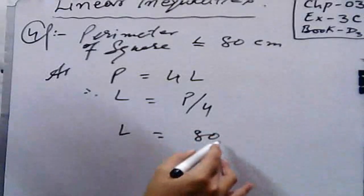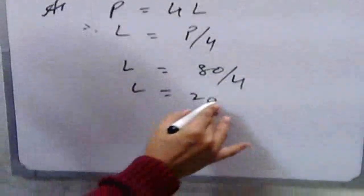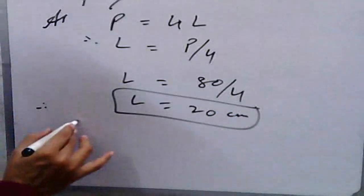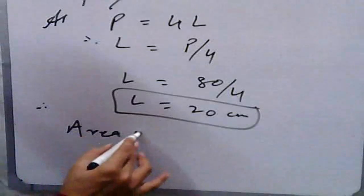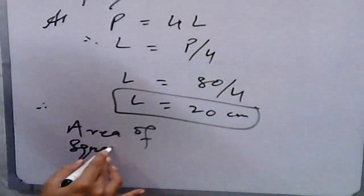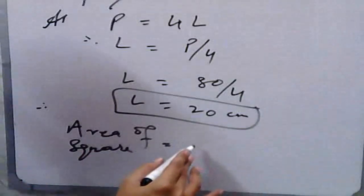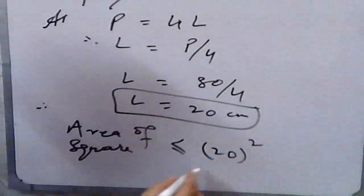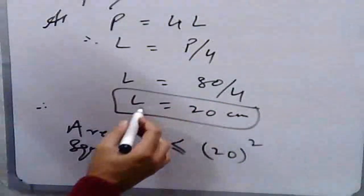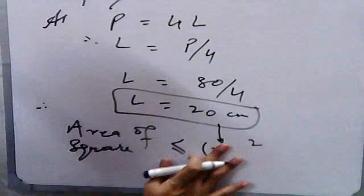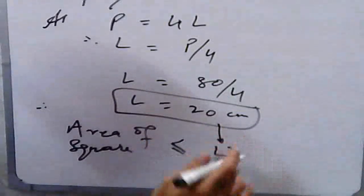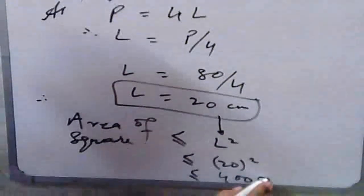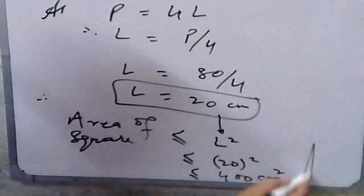Length is equal to 80 divided by 4, so the length is 20 centimeters. We have been asked to find the area of a square. Area of a square is less than or equal to L squared. Putting the values, that is 20 squared, you will get 400 centimeters squared. That is your required result.